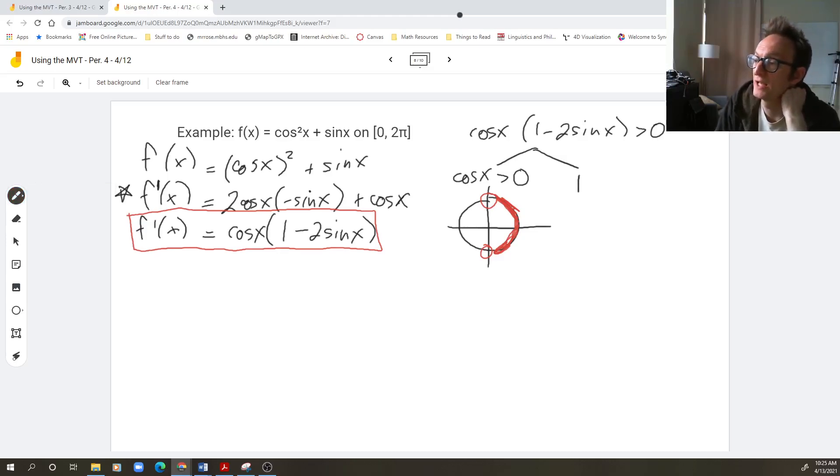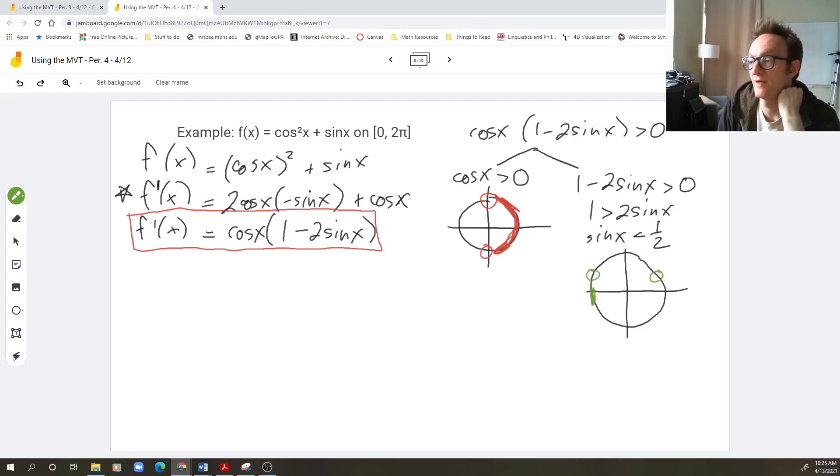And when is one minus two sine x positive? Well, that's going to happen whenever one is bigger than two sine x, which is just another way of saying whenever sine x is less than one half. So when is sine x less than a half? Again, I make a picture of a circle, unit circle, and I use the definition of sine. What's the definition of sine? It's the y coordinate. When is sine one half? Sine is one half over here, pi over six, and five pi over six. So sine will be less than one half when the y coordinate is less than one half. In other words, all this stuff.